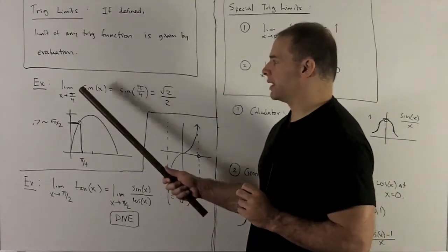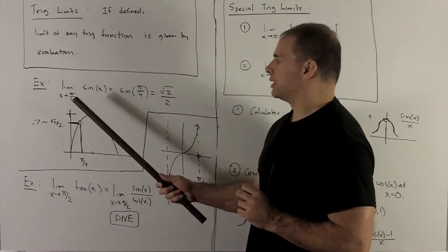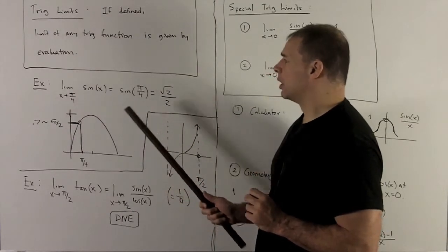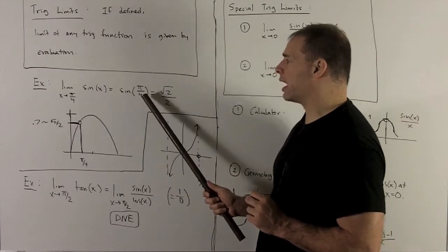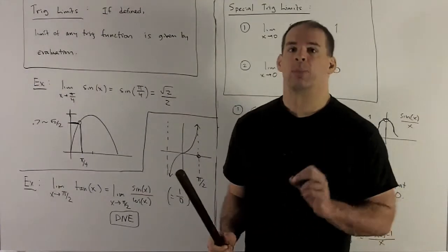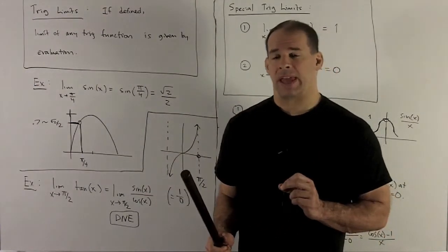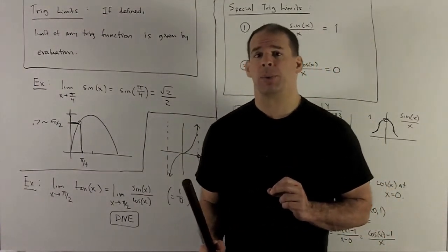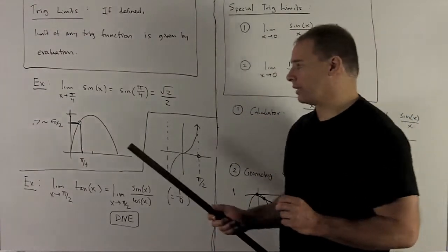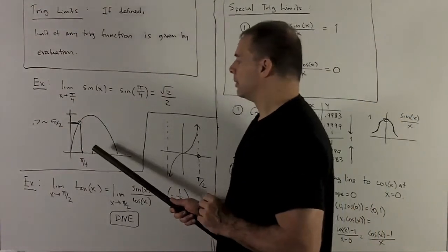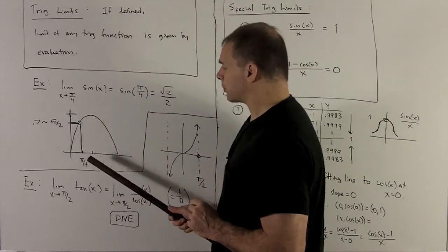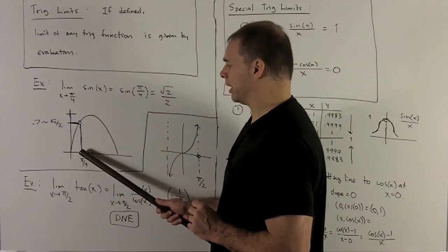For instance, if I take the limit as x goes to π/4 of sine of x, all I do is put π/4 in there. Sine of π/4 gives us √2/2, so that's going to be my limit. If I take a look at the picture and draw in sine, at π/4 we're going to be at this point here.